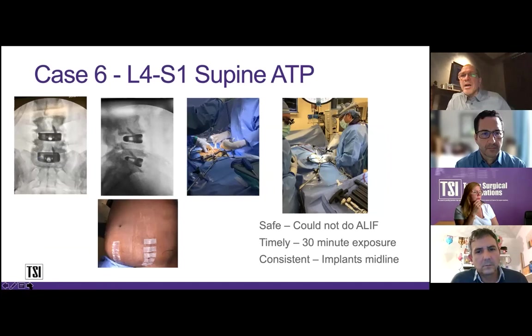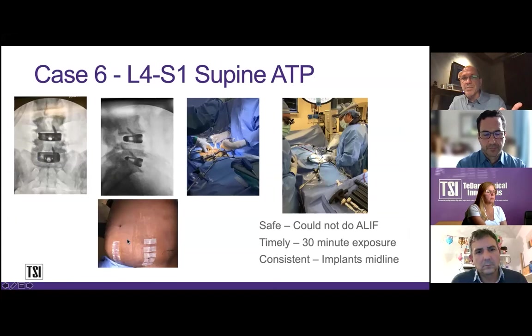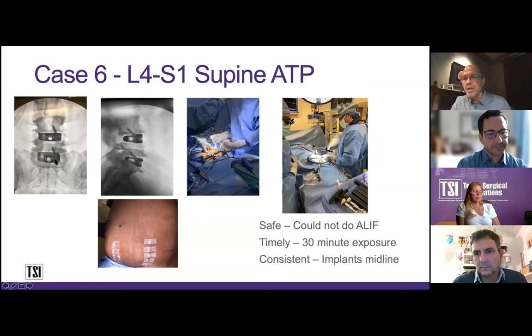I've coined the term 'supine ATP' — working in the lateral corridor with the patient supine. This was a case where I tried a retroperitoneal ALIF but couldn't get into the retroperitoneal space due to multiple previous abdominal surgeries. Transabdominal had a gigantic amount of adhesions. So I kept the patient supine, made an oblique incision, tilted the table 25 degrees, used the retractor with a hinge, and the spine surgeon worked in the oblique corridor on the left side. We placed two NuVasive cages at 35-degree insertion points with one screw — this patient was a front-back anyway, so we moved on to the posterior part.